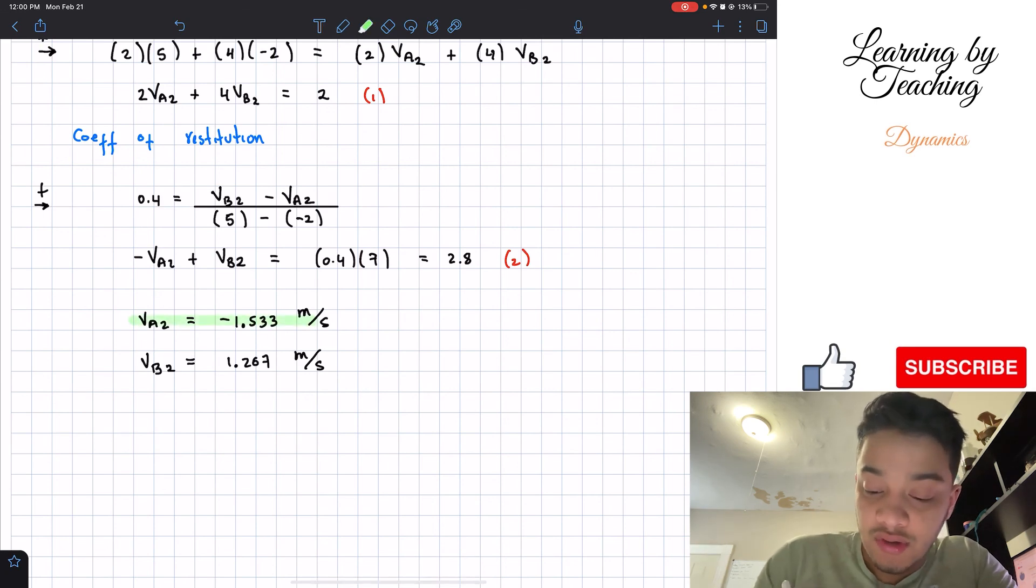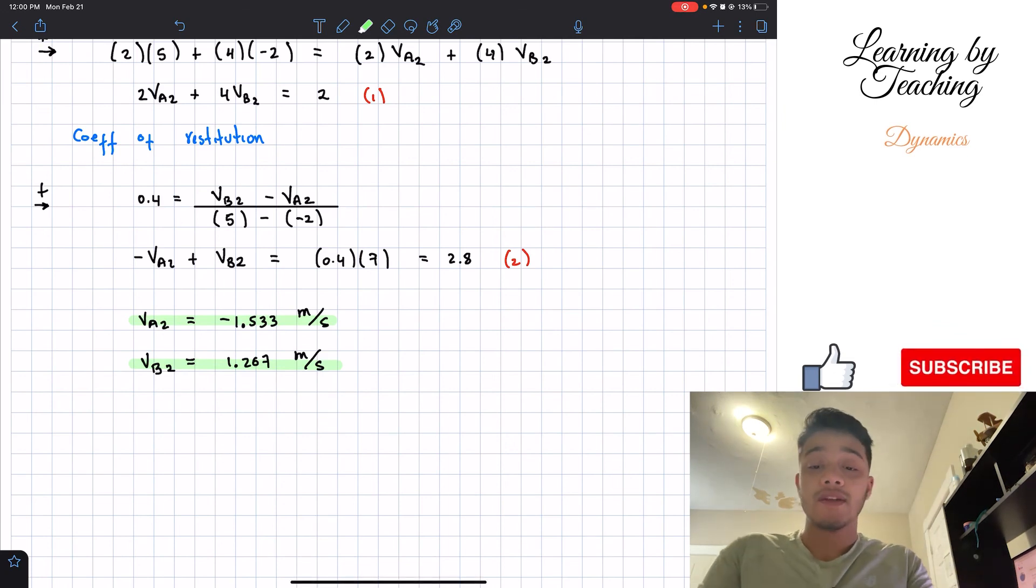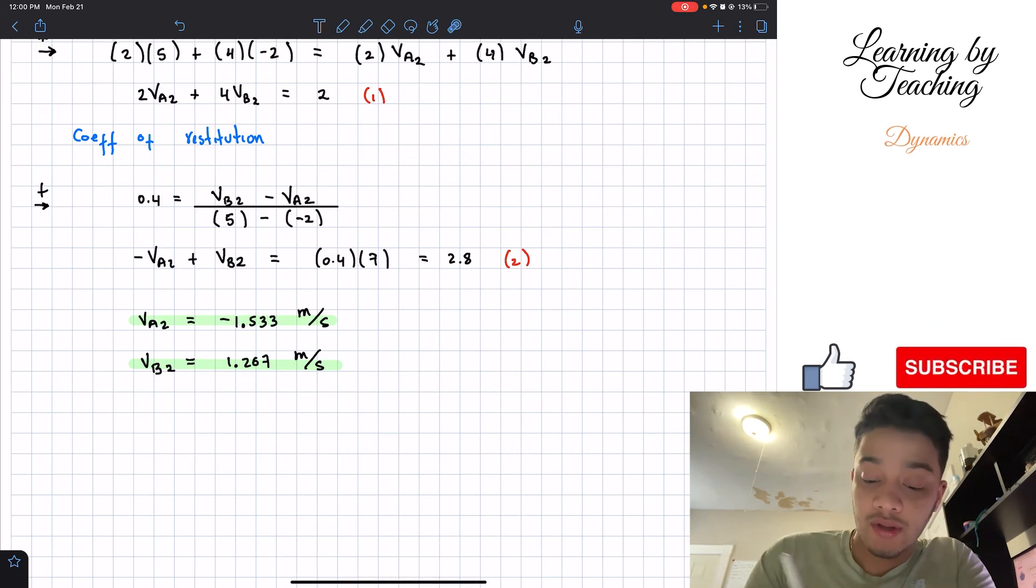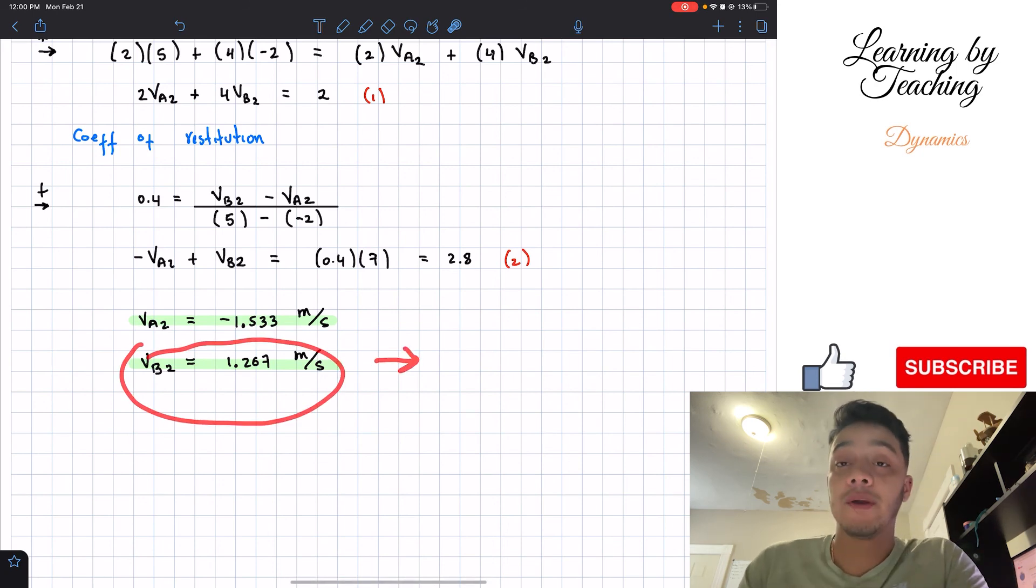And these two are our final answers for the velocities of our disks. So one thing I would like you guys to notice is that my velocity of A is negative, meaning that it's going to the left. And my velocity of B is positive, meaning that it's going to the right.